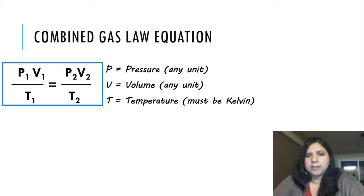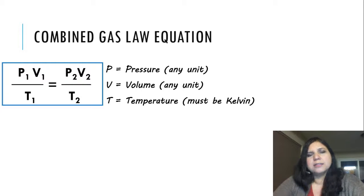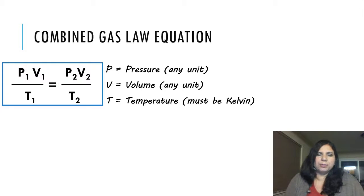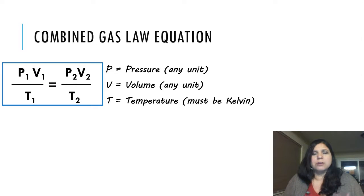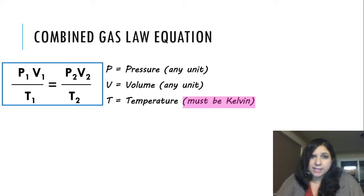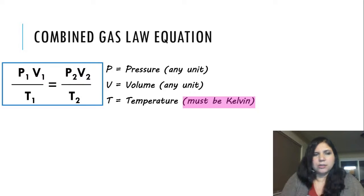The reason temperature must be in Kelvin is because Kelvin has no negative temperatures. Since it doesn't have negative temperatures, when we're using this equation, you won't end up with things like negative volumes and negative pressures, which don't exist. Temperature has to be in Kelvin.